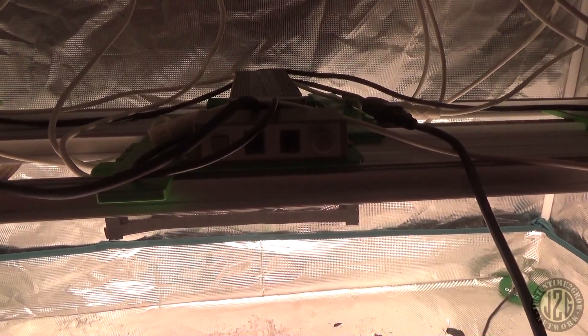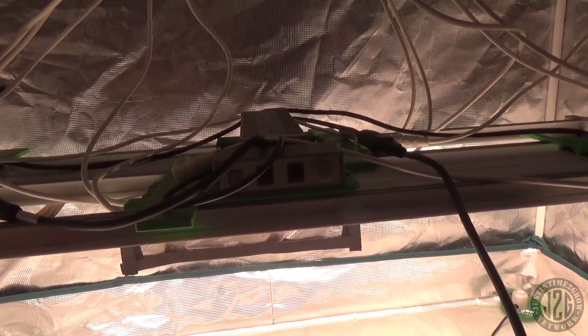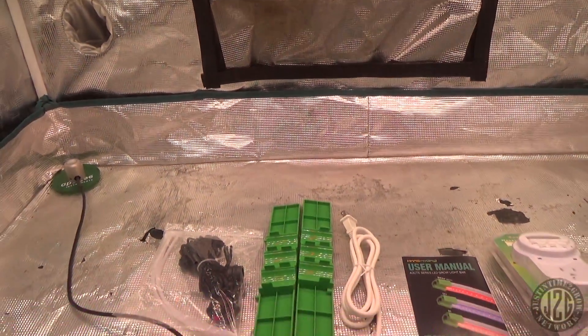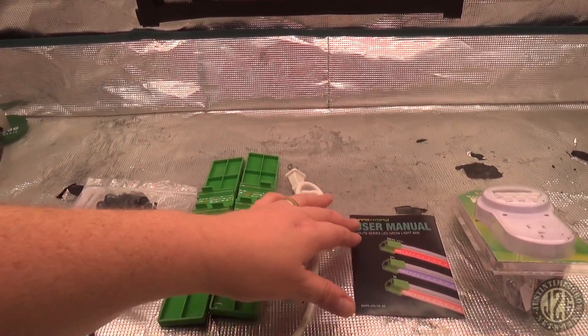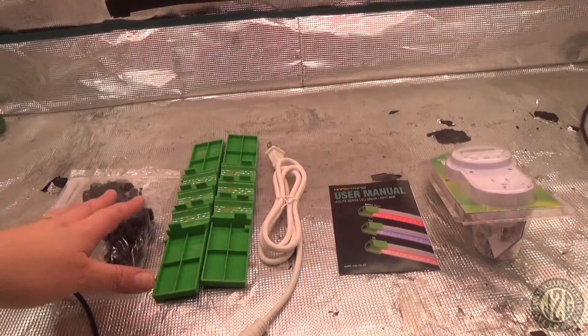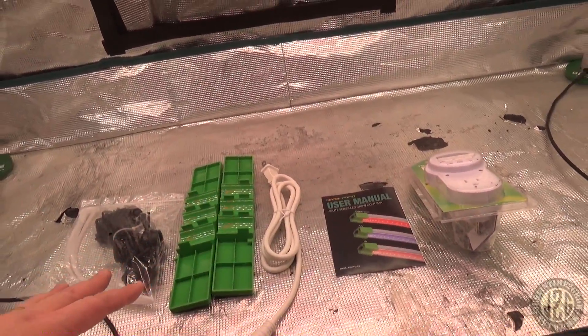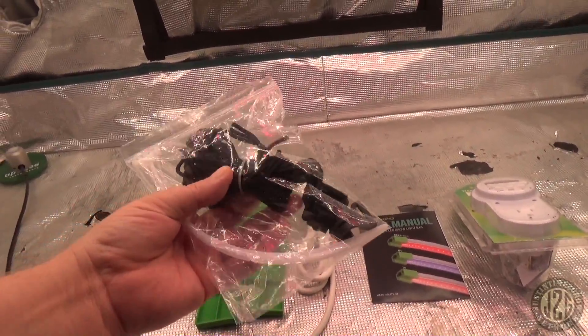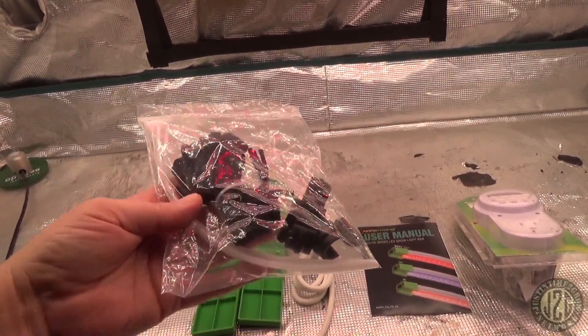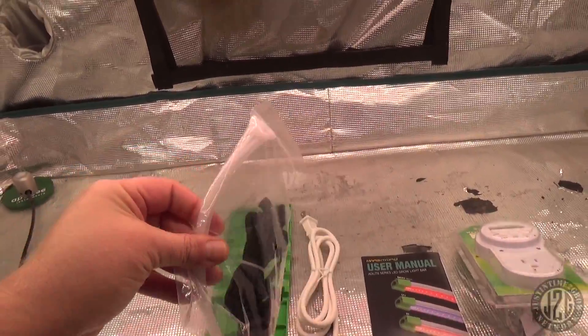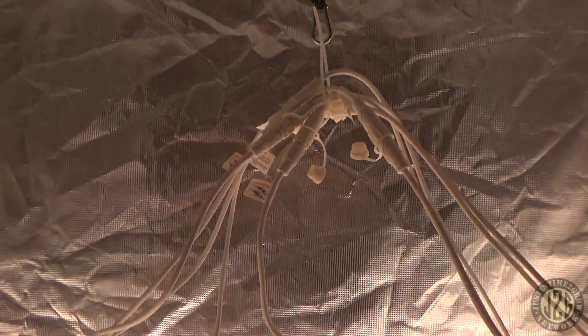We'll be turning that off to see PAR numbers, we'll check the spectrum of course, and then the heat as well. But this is what you get when you get your setup. This is just for one, so if you have all three you're gonna get triple this basically. This is the hanging kit if you want to hang it individually and not hook it to your light.